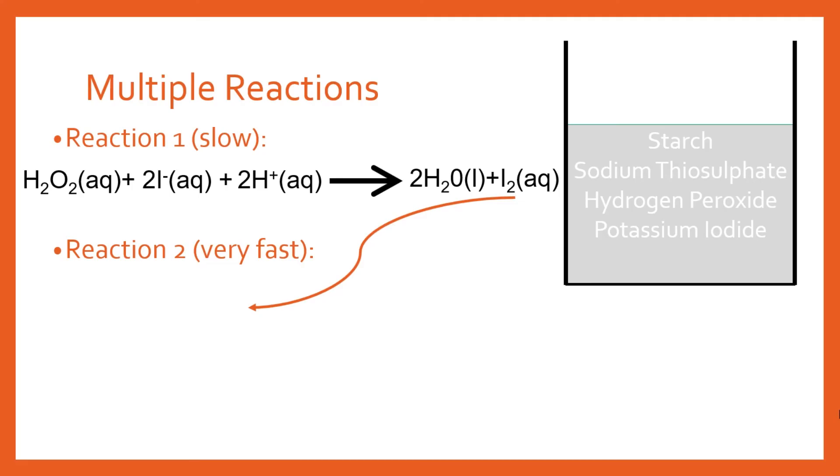So the second this iodine is produced it immediately ends up reacting with your sodium thiosulfate and so whenever iodine is produced it goes into the second reaction and it's essentially mopped up, it's being removed so it never actually gets the chance to react very much with the starch and turn black because it's being mopped up so quickly.